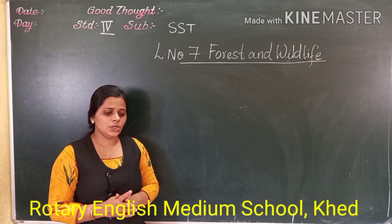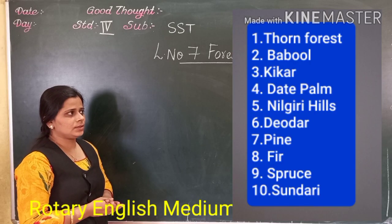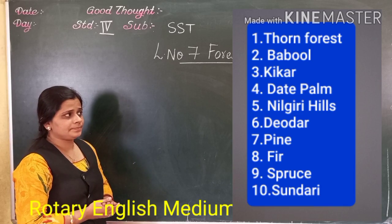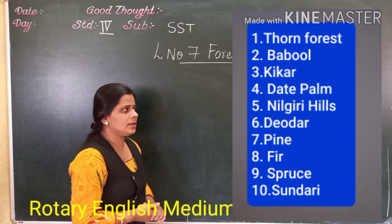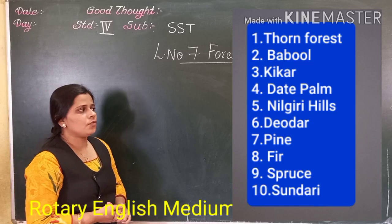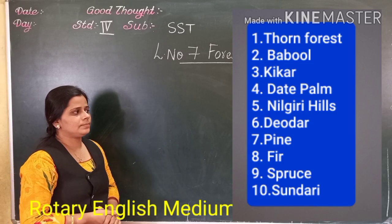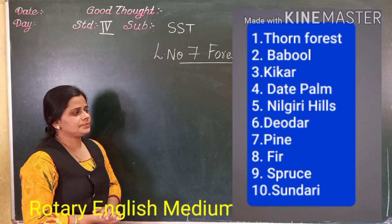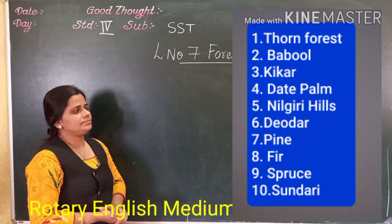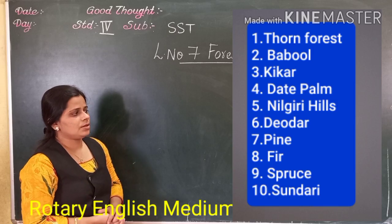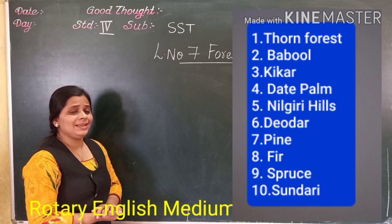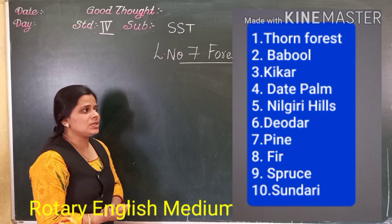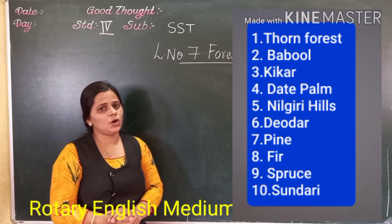Now students, take note of your new words: first, thorn forest; second, babul; third, kiker; fourth, deodar; fifth, nilgiri; sixth, teak; seventh, pine; eighth, fir; ninth, spruce; tenth, sundari. Copy these words down in your notebook.